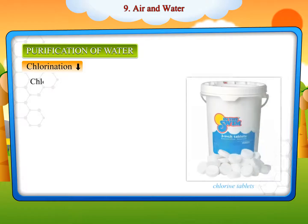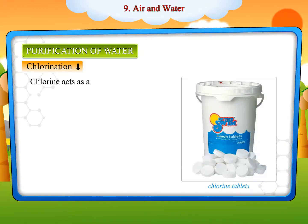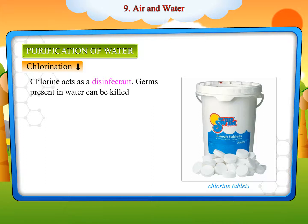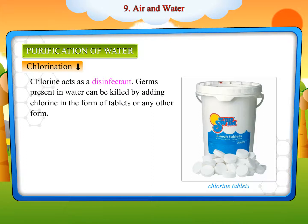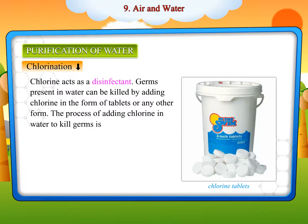Chlorination. Chlorine acts as a disinfectant. Germs present in water can be killed by adding chlorine in the form of tablets or any other form. The process of adding chlorine to water to kill germs is called chlorination.